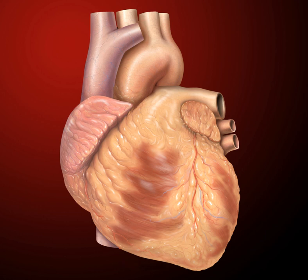The heart pumps blood with a rhythm determined by a group of pacemaking cells in the sinoatrial node. These generate a current that causes contraction of the heart, traveling through the atrioventricular node and along the conduction system of the heart.